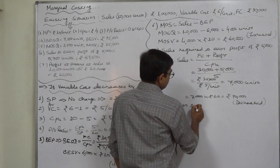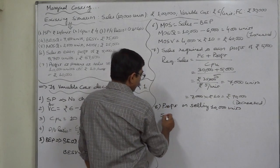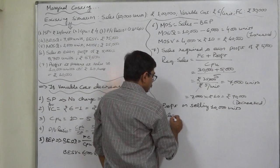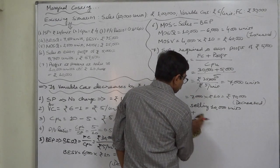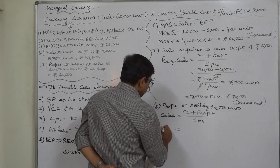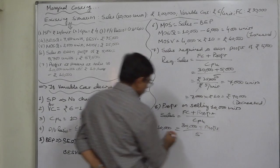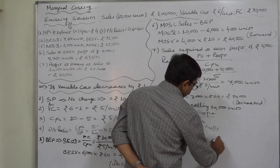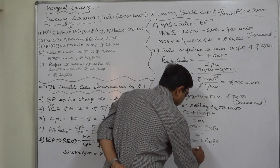Finally, profit on selling 10,000 units. Using the same formula: sales equals fixed cost plus profit divided by contribution per unit. Sales is 10,000 units, fixed cost is rupees 30,000, contribution per unit is rupees 5. Cross-multiplying gives rupees 50,000 equals rupees 30,000 plus profit, so profit on selling 10,000 units is rupees 20,000.